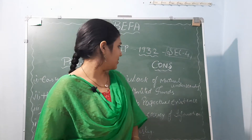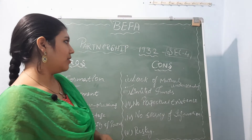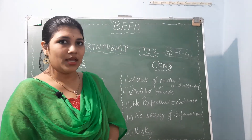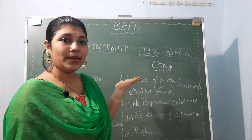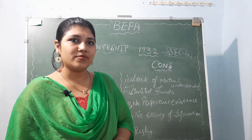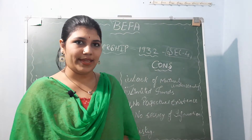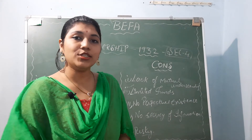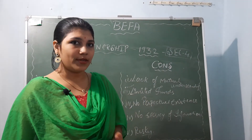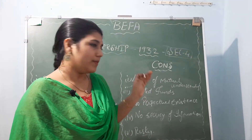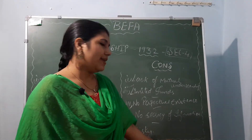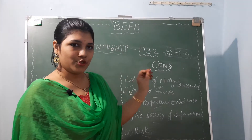Coming to the cons — there are five cons. First is lack of mutual understanding. We already spoke about this before coming to pros and cons — understanding is really important and it is a main pillar. Understanding is important in two cases: in family and in business. In business, you join together with the idea of earning profit, so you should have proper mutual understanding between you. If not, the problems that arise include: limited funds, no perpetual succession, no secrecy of information, and it is risky.